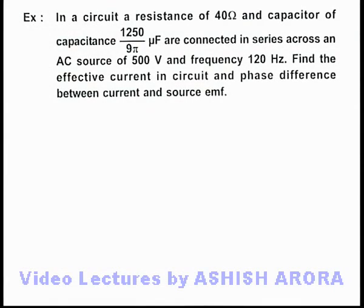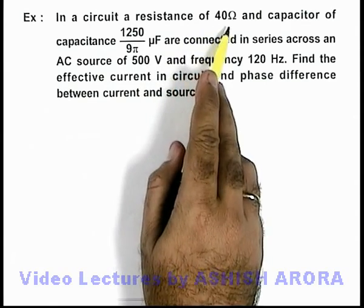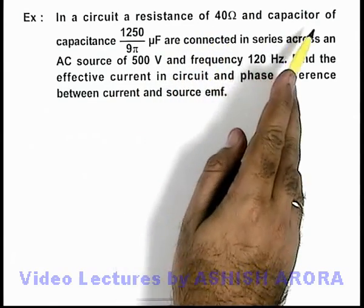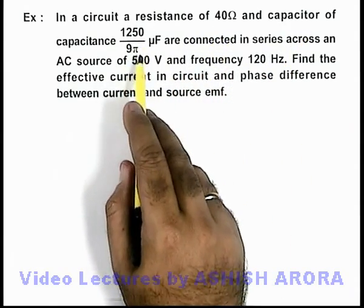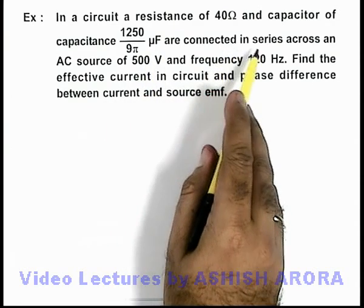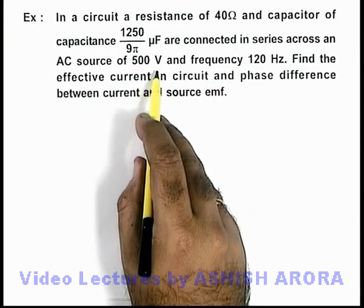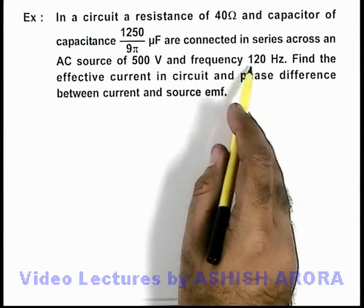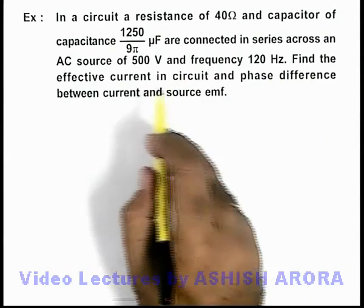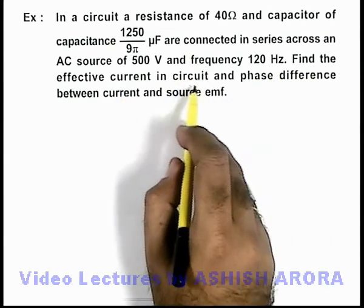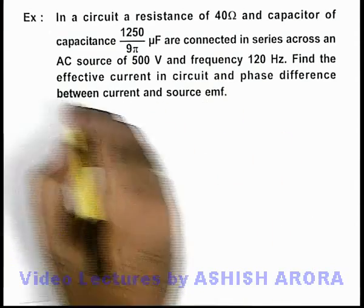In this example, we are given that in a circuit a resistance of 40 ohms and a capacitor of capacitance 1250 by 9π micro farad are connected in series across an AC source of 500 volts having a frequency of 120 hertz. We are required to find the effective current in the circuit and the phase difference between the current and source EMF.